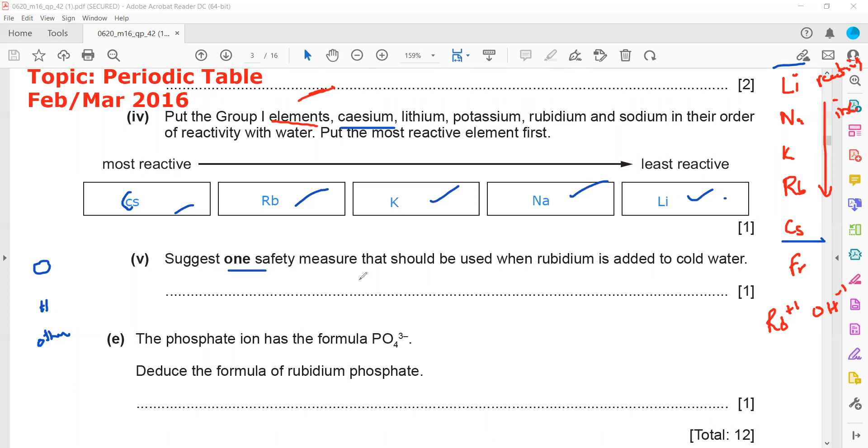Then suggest one safety measure that should be used when rubidium is added to cold water. Because the reaction is like an explosive reaction, we should use goggles. We should use lab coat, or we should stand away from the source, or use tongs or a safety screen. So you can mention gloves, goggles.